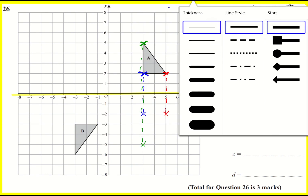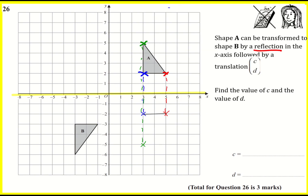Let's do that nice and neatly with a ruler. Always use a pencil and a ruler for this task, because if you do it in pen and you do it wrong, oops, you can't rub it out. And that is a reflection of A in the x-axis. If you want to, you can also use tracing paper — trace over your shape, put your ruler along the x-axis, and fold the tracing paper over to give this reflection.